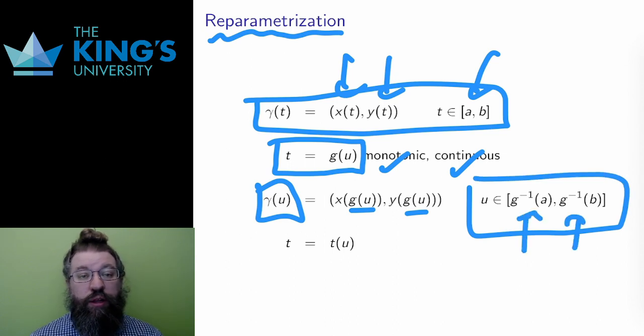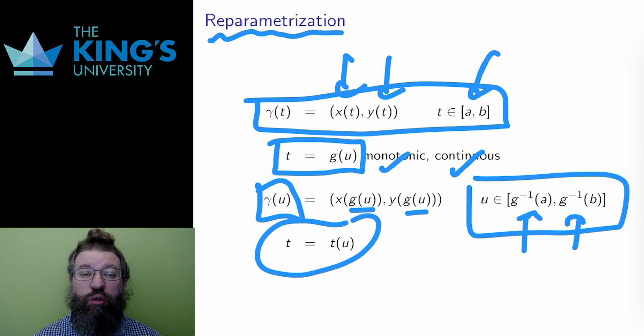As a matter of notation, the function g is sometimes just written t of u to indicate that the old variable t is now given by some expression in the new variable u.